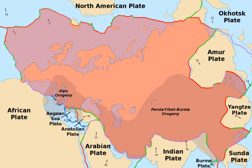The Eurasian Plate is a tectonic plate which includes most of the continent of Eurasia, a landmass consisting of the traditional continents of Europe and Asia, with the notable exceptions of the Indian subcontinent, the Arabian subcontinent, and the area east of the Chersky Range in East Siberia.